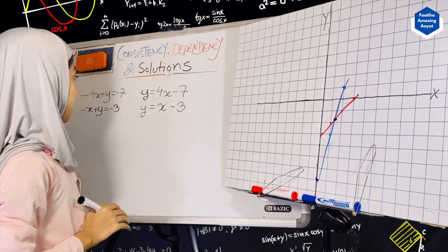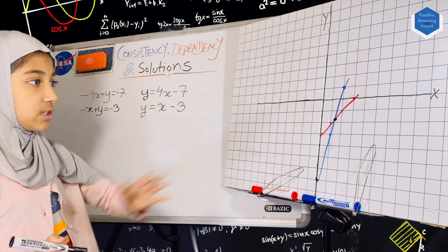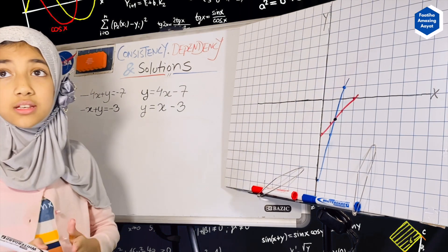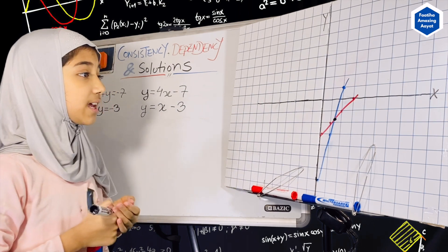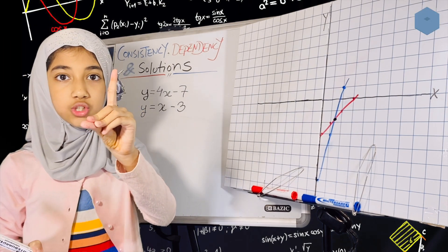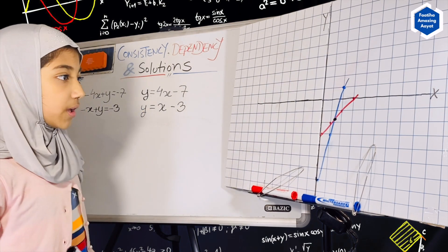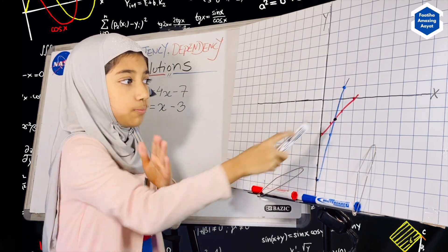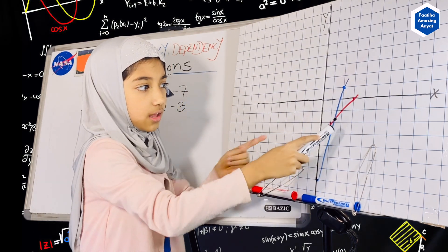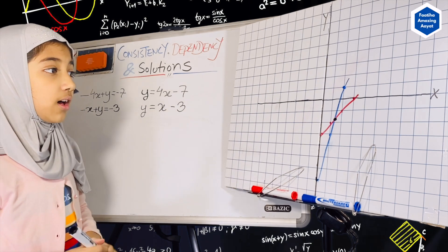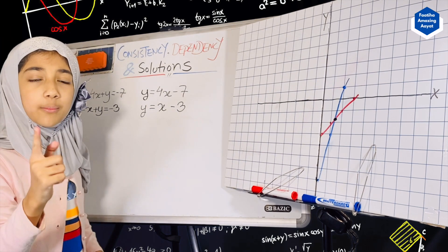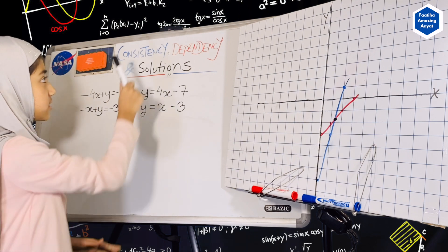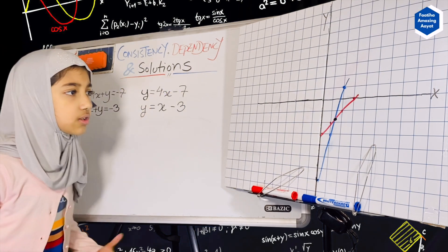So basically we just did the graph, and from this we can say that it has exactly one solution, because if the lines intersect at one point, then there is one solution. Now I'm going to explain what consistency, dependency, and the solutions are.